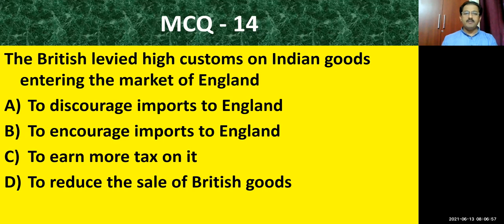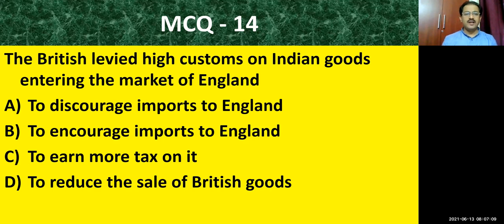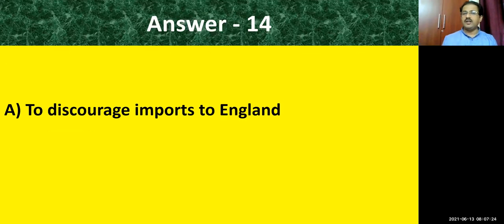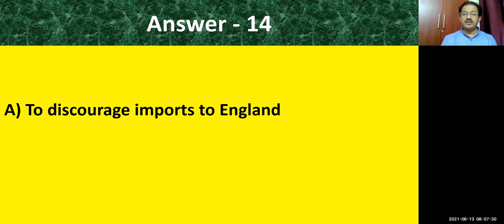MCQ question number fourteen: the British levied heavy customs on Indian goods entering the market of England — why? Options: to discourage imports to England; to encourage imports to England; to earn more tax on it; to reduce the sale of British goods. The correct answer is: to discourage imports to England. They wanted people of England to buy their local products — whatever was produced in the factories or industry — rather than imported goods from India.